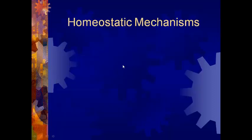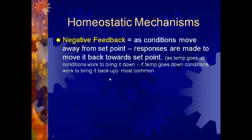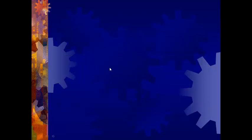There are two types of homeostatic mechanisms. The first type is called a negative feedback mechanism. The conditions move away from set point, and responses are made by the body to move it back towards set point. This is a negative feedback mechanism — here's your set point in the center, here's your high value, and here's your low value. Your body has to keep the variable within this range.